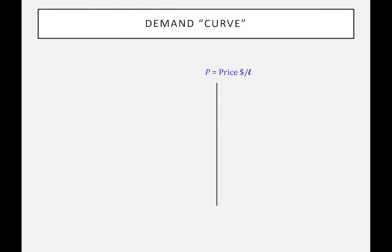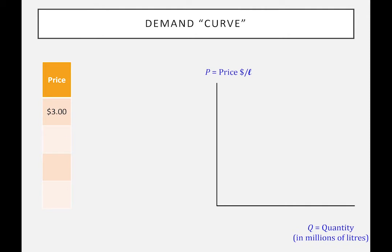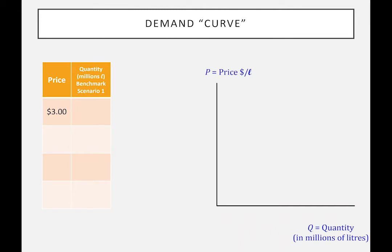Here's the graph I'll use extensively in this course. On the vertical axis I put P for price in dollars per liter; on the horizontal axis I put Q for millions of liters of milk. I start the experiment quoting a price of three dollars. I go to all the households, ask how much milk they want at three dollars, and when I add across all households, I get 20 million liters. I'll mark that on the graph.